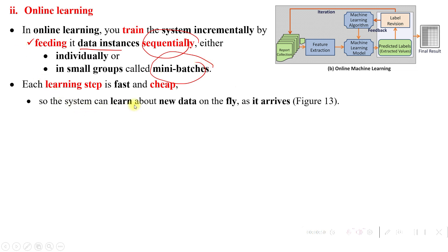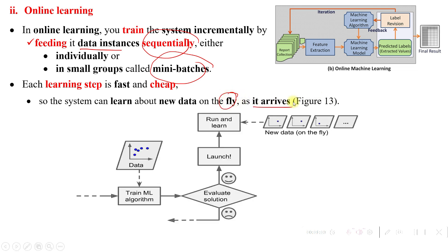The system can learn about new data on the fly as it arrives. Initially, our training algorithm is going to find patterns based on the available data. Our machine learning model is then going to train on that data and make predictions.